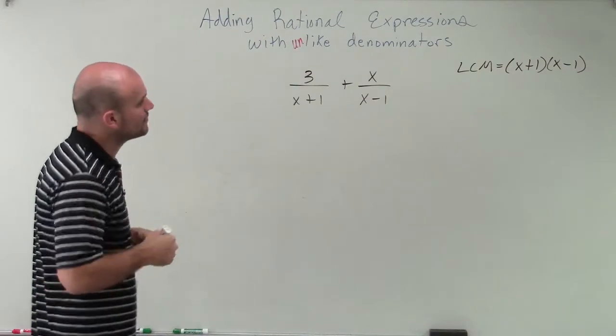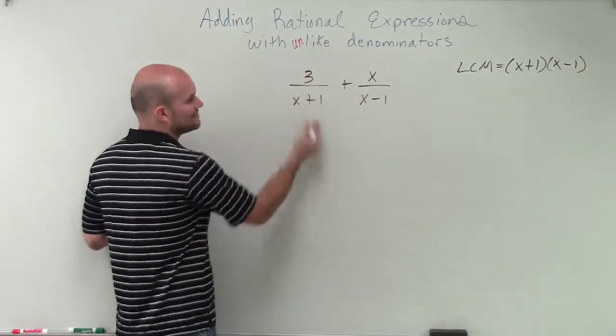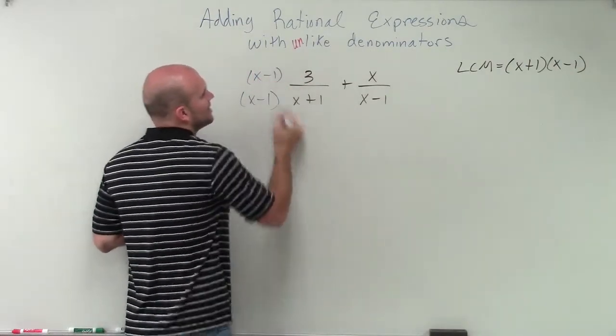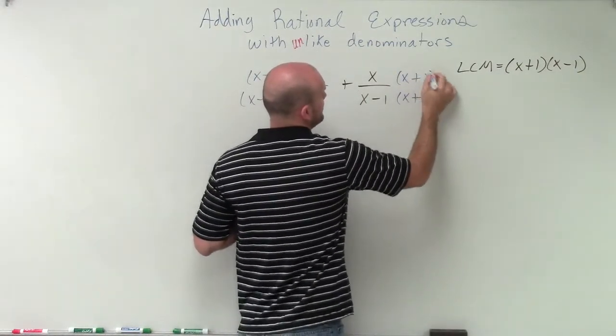So now, what I'm simply going to do is multiply to see what I need to multiply to get to my LCM. So if you already have x plus 1, I need to multiply by x minus 1 on the top and the bottom. Over here, I need to multiply by x plus 1 on the top and the bottom.